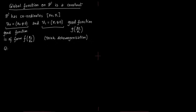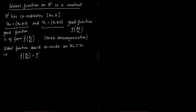A global function on the projective line — defined on all of P1 — must also be defined on the intersection of U0 and U1. We should be able to glue the function together on the intersection. So if we have a global function that is a polynomial f on U0 and a polynomial g on U1, on the intersection these two polynomials must be equal — we must be able to glue them on the intersection.